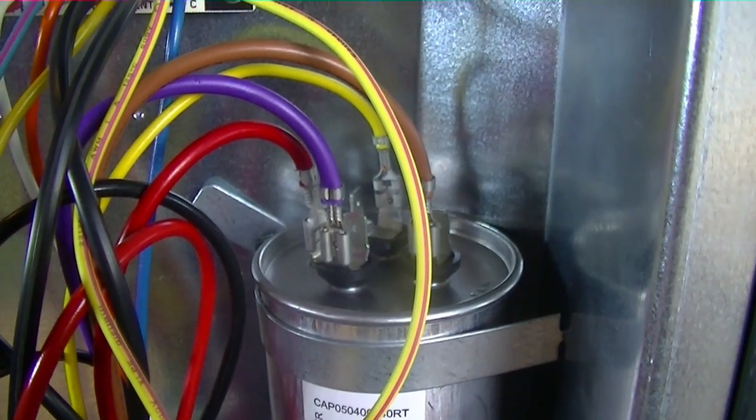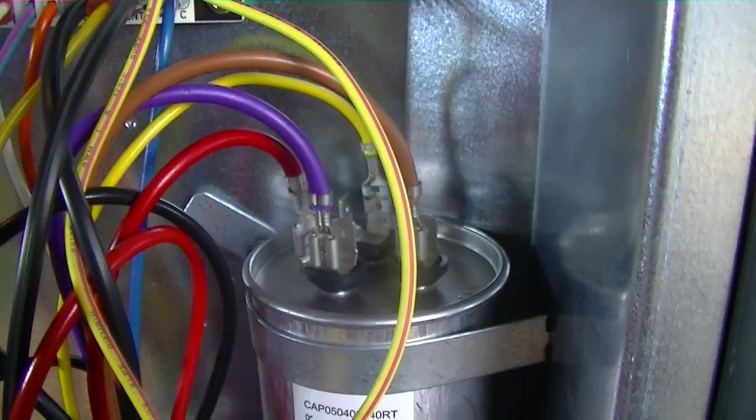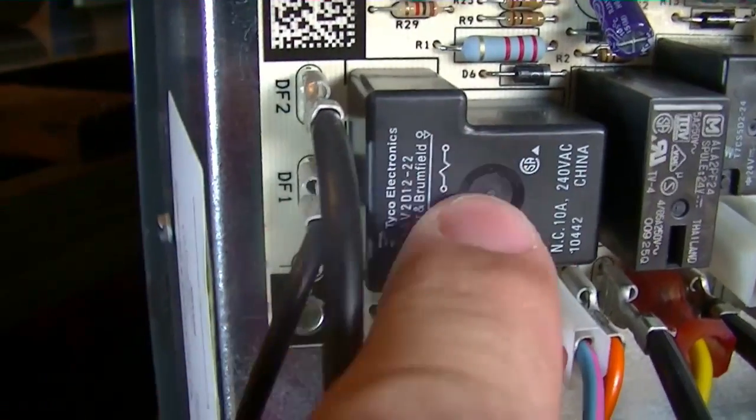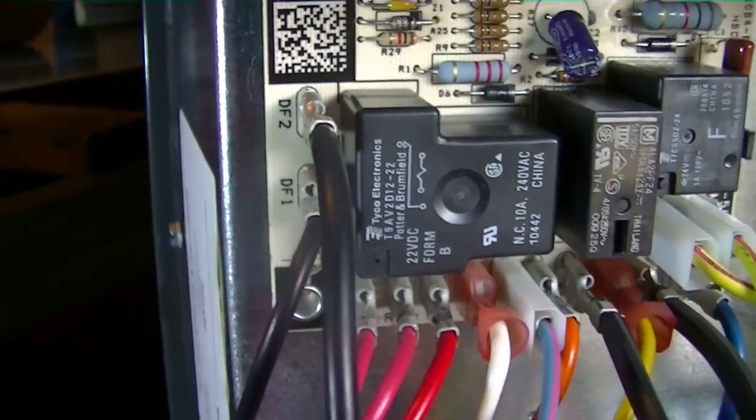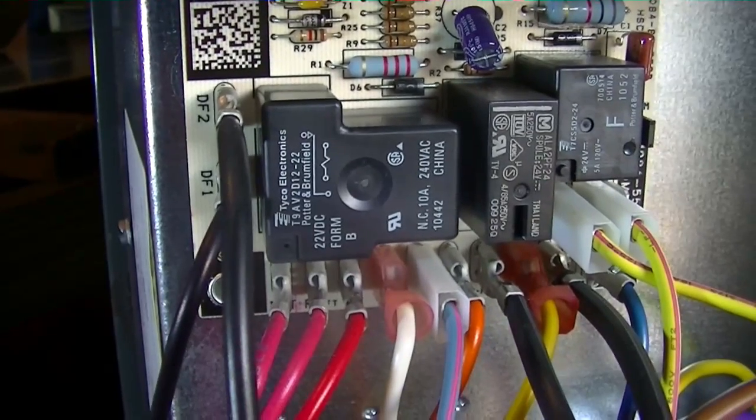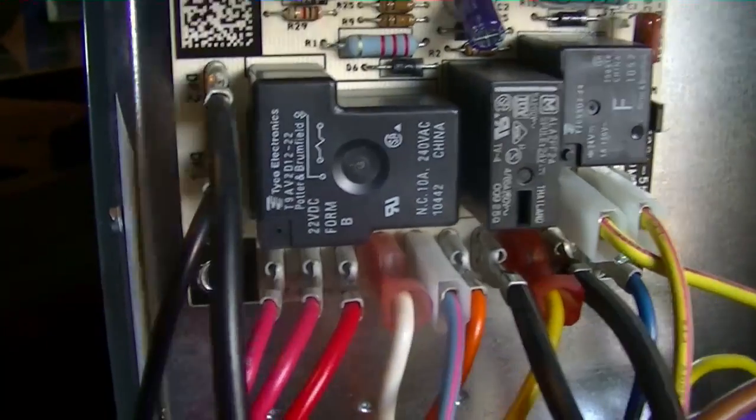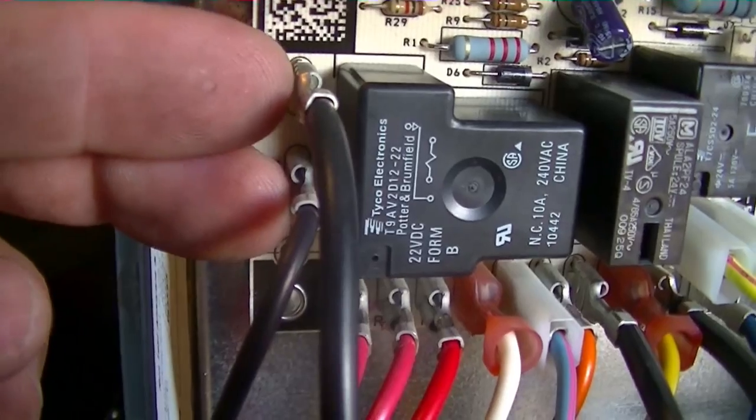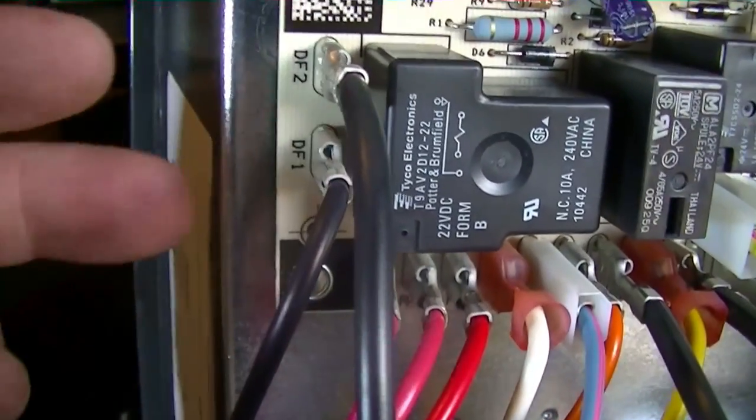The black, which is the common for the fan motor itself, actually heads to the defrost board where it can be shut off by this relay. This defrost relay can shut the fan off when the system is in defrost. And that's why that particular wire goes through there. It can be broken in between those two points.